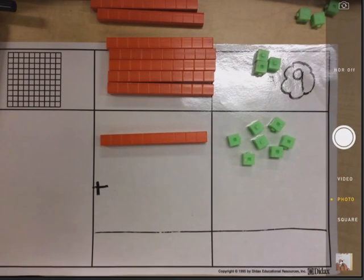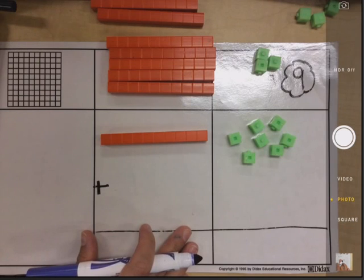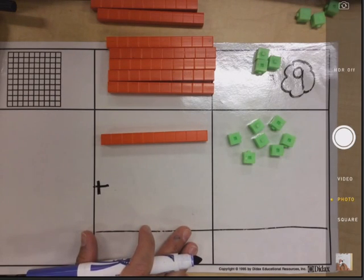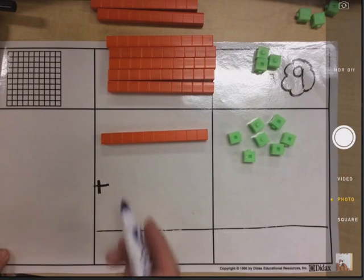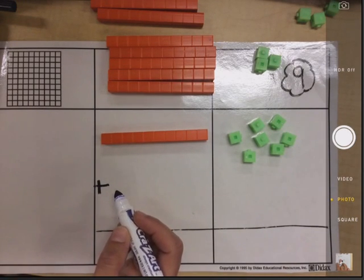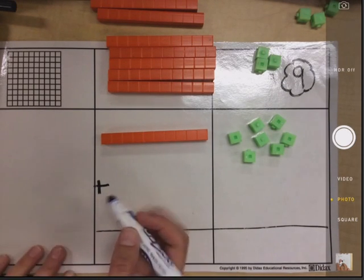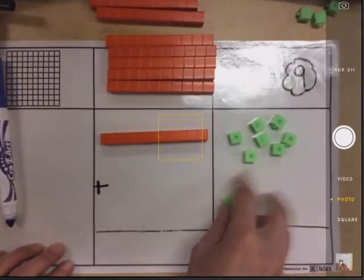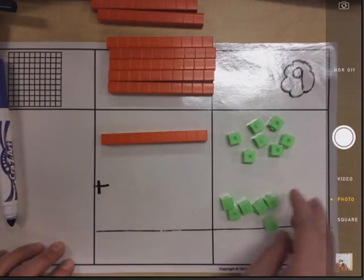And if you have 17 on your work mat, give me a thumbs up, or your partner can give me a thumbs up if you're working. Thank you. 17 is the first addend. What's the second addend? What are we supposed to add? Seven. So find seven more cubes.